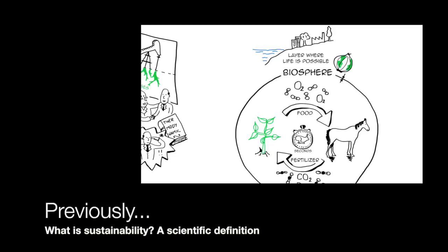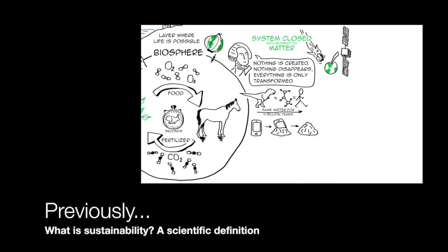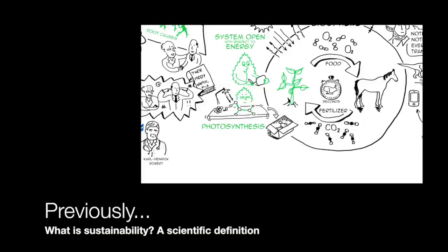In the first video we discussed how a group of 50 scientists managed to get a consensus on natural cycles, and we concluded that sustainability is actually the capacity of our human society to continue indefinitely within the natural cycles.